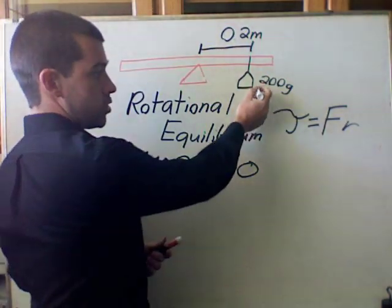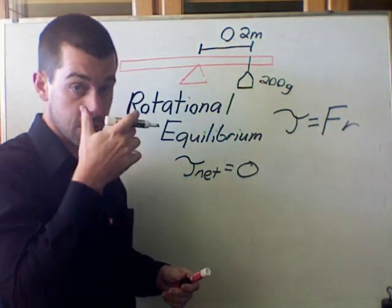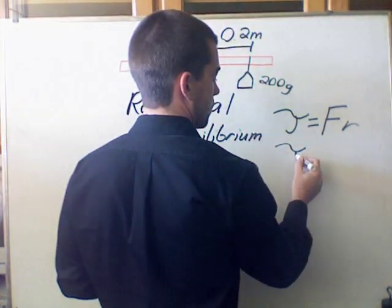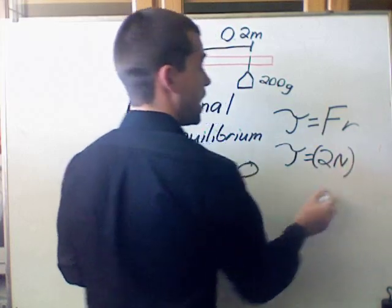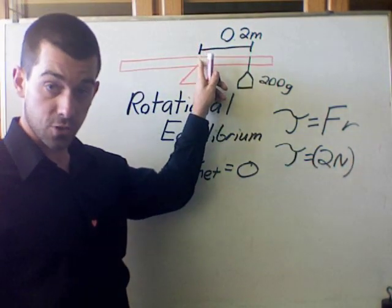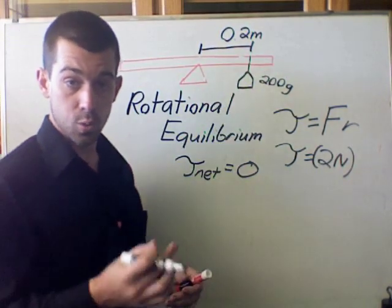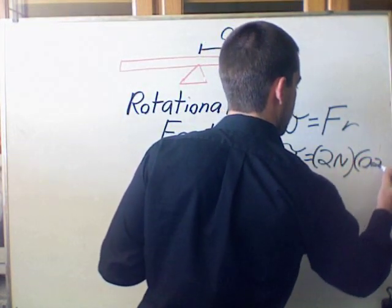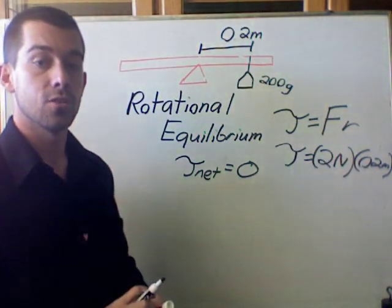And so in this case I can take the force of weight. Well this is 200 grams, and so the force from that 200 grams is actually 2 newtons. And I multiply that times R, which is the distance between the center of rotation and where the force from the weight is applied, which is 0.2 meters.